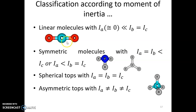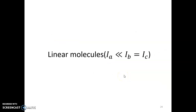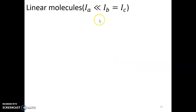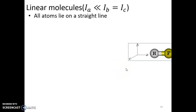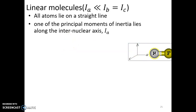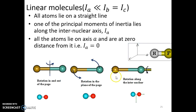For linear molecules, Ia is negligible and Ib equals Ic. All atoms lie on a straight line and the molecule is cylindrically symmetric. Along the internuclear axis we place the a-axis; b and c are perpendicular to it. So Ia, which lies along the internuclear axis, is the one that equals zero.